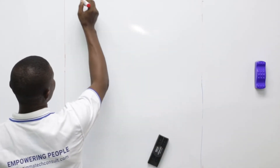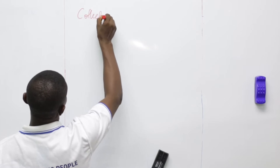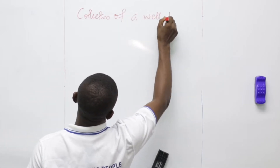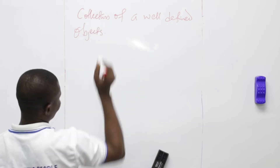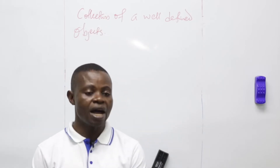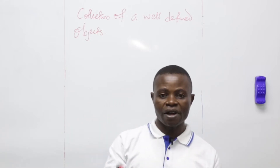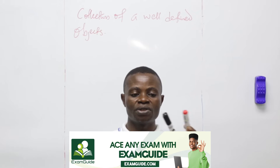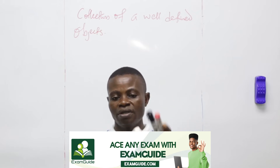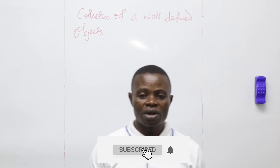Let us go to the definition of set. A set is just a collection of well-defined objects. When you have the word 'well-defined,' these are things that are related to each other. For instance, I have a marker. If I have a pack of markers, the elements that are related to each other — marker to marker. And this is a piece of paper.